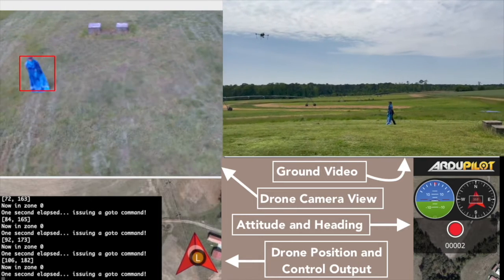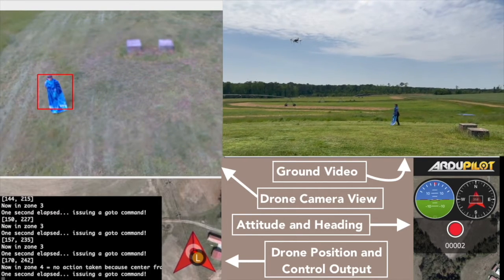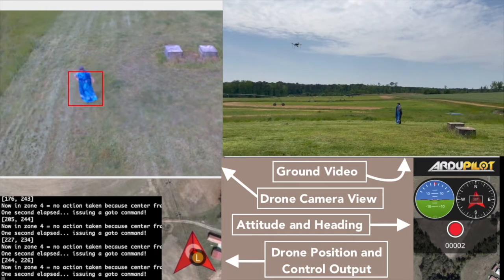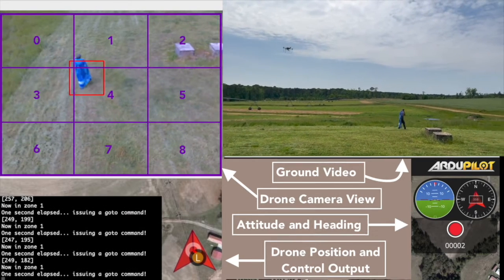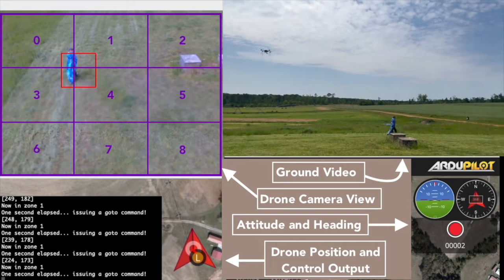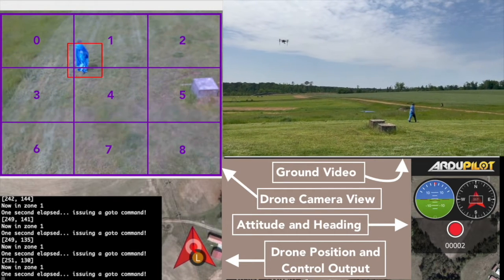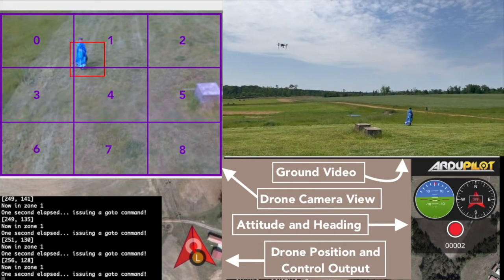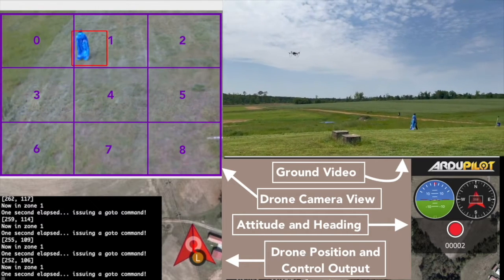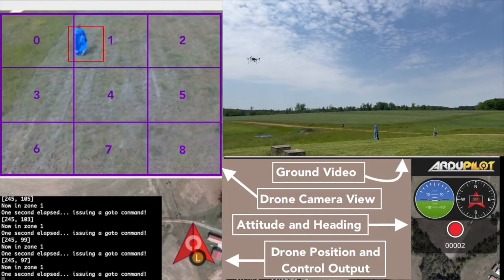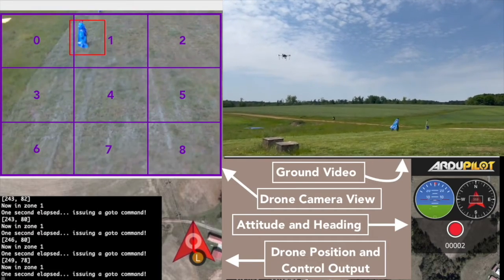That way, any movement of the object up and down in the field of view of the camera corresponded to movement along the ground in the x and y axes respectively. We divided the camera feed up into nine different portions. If the object was in the top middle rectangle of the frame, the drone would issue a go-to command 2 meters north. If it were in the bottom right rectangle, it would issue a go-to command 2 meters south and 2 meters east, and so on.